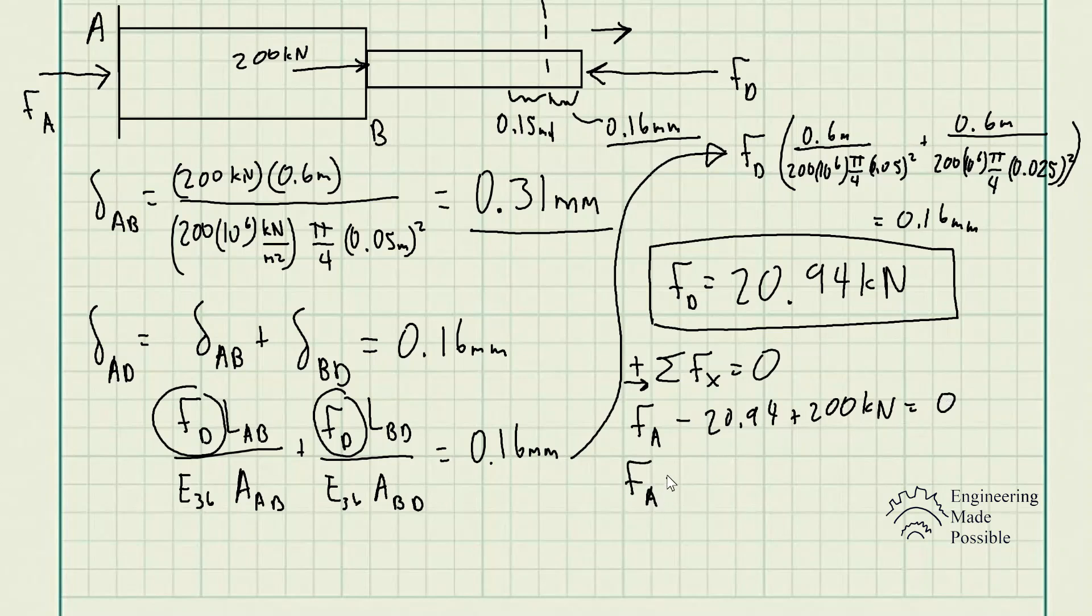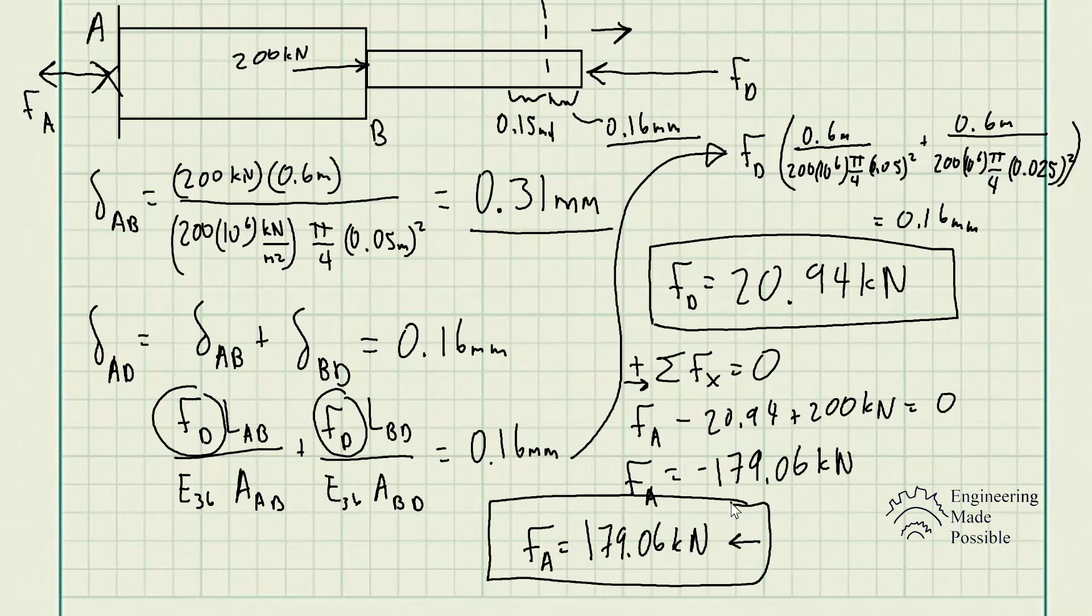Our FA is equal to negative 179.06 kilonewtons, which actually means that our assumed direction was incorrect and it should be going the other way. So it's equal to 179.06 kilonewtons going towards the left. And this is how you solve for the reactionary forces of these kinds of systems when you're dealing with a rod assembly that's constrained between two walls.